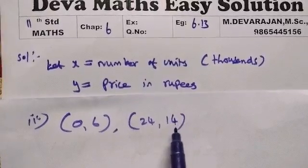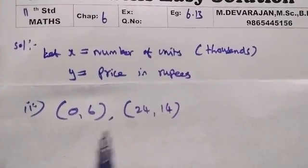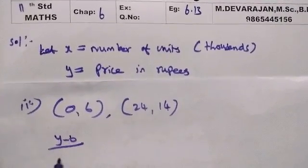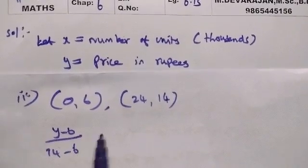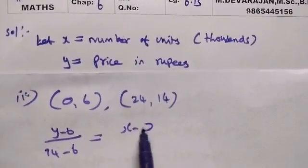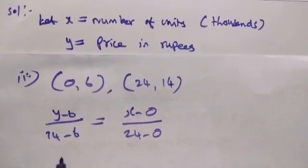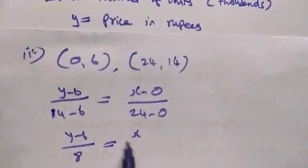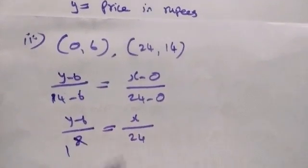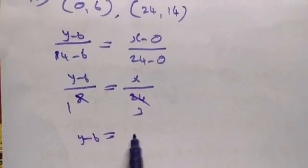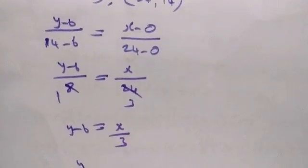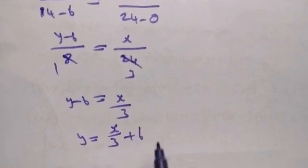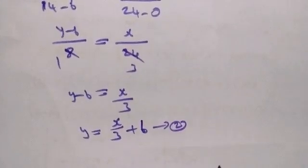At price Rs.14, supply is 30,000 units. Using these two points, applying the two-point formula to get equation 2 for supply.